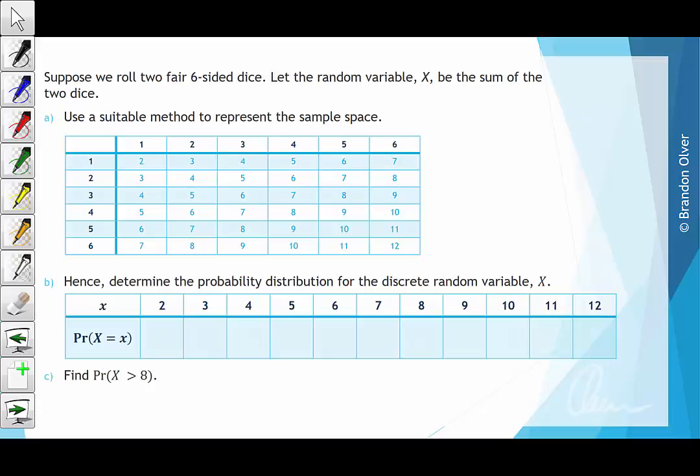If we consider the outcome where the faces sum to 2, there's only 1 outcome out of 36, so we have 1/36. For a sum of 3, there are 2 outcomes out of 36, so we have 2/36.